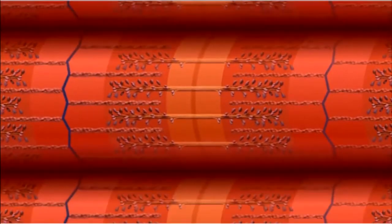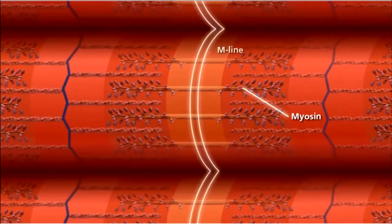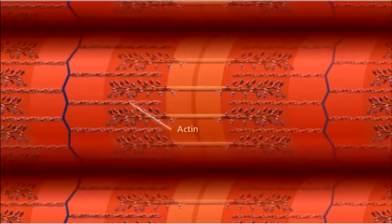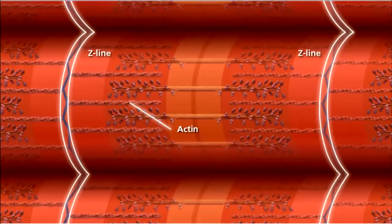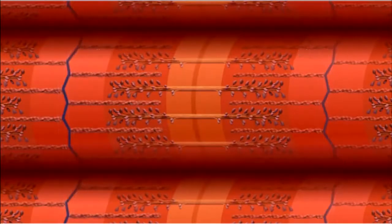The thick filaments are myosin, which are anchored at the center of the sarcomere called the M-line. The thin filaments are composed of the protein actin, which are anchored to the Z-lines on the outer edges of the sarcomere.